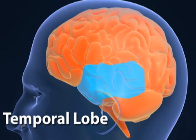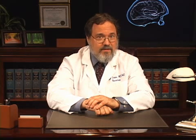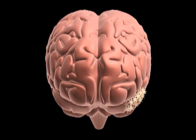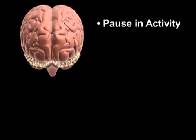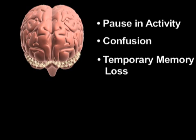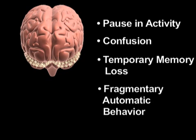The temporal lobe is the part of the brain most prone to develop seizures. It is responsible for many complex activities, including the formation and retrieval of memories and the control of emotional states. If a temporal lobe seizure spreads to both temporal regions, then the manifestation of the seizures increases, with a pause in ongoing activities, confusion, temporary memory loss, and fragmentary automatic robot-like behaviors.